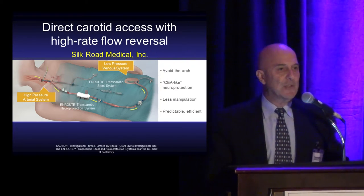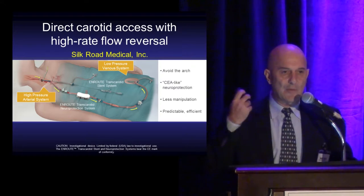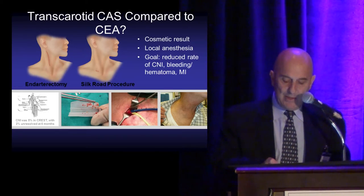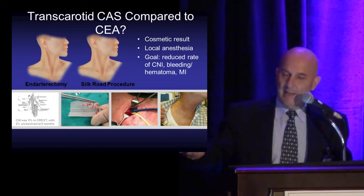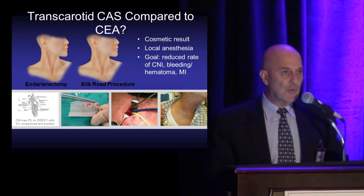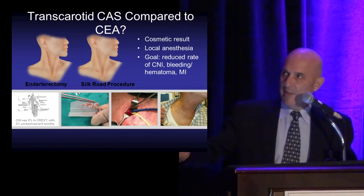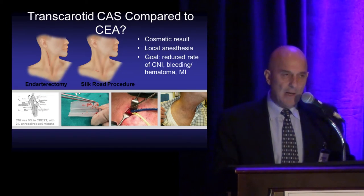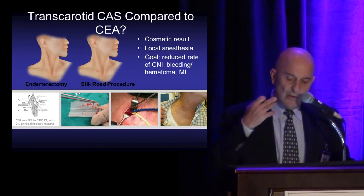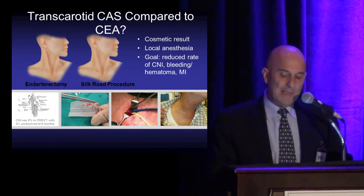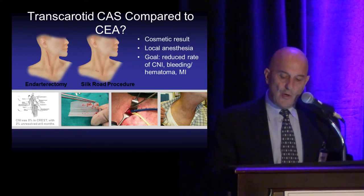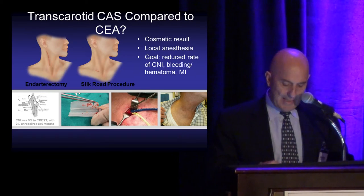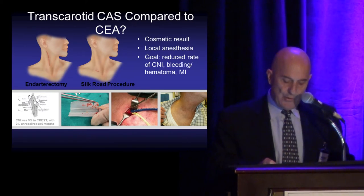Some may ask: if you're making an incision in the neck, why not just do a carotid endarterectomy? It's a different level of dissection. Carotid endarterectomy requires access to the plaque itself. Here, a small incision is made in the common carotid artery where the artery is disease-free. It can be done under local anesthesia, and importantly, it avoids the risk of cranial nerve injury that can occur during carotid endarterectomy.